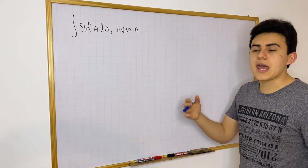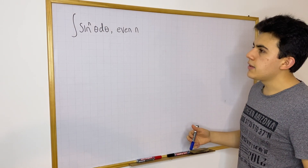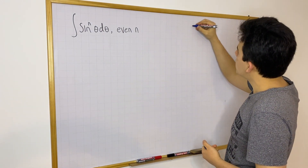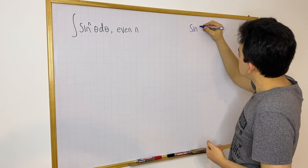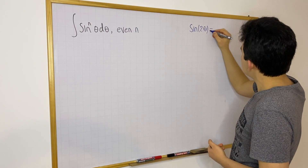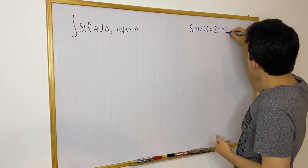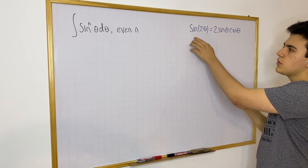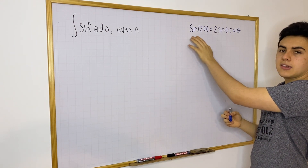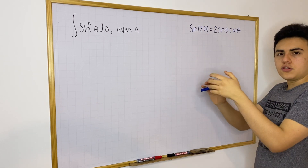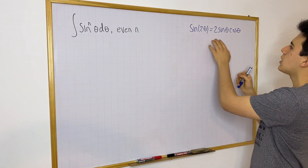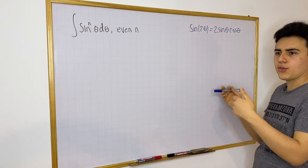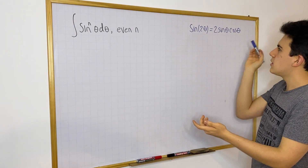These are the double angle or half angle formulas. One of them is: sine of 2θ equals 2 times sine θ times cosine θ. You can verify this because sine of 2θ is the same as sine of (θ + θ), and when you expand that you get sine cosine plus sine cosine, so you just get 2 sine θ cosine θ.